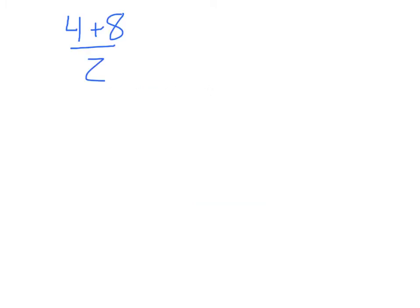When you see an expression like this, 4 plus 8 all divided by 2, we know that we can just combine like terms in the numerator to get 12. So we have 12 over 2, which is 6.